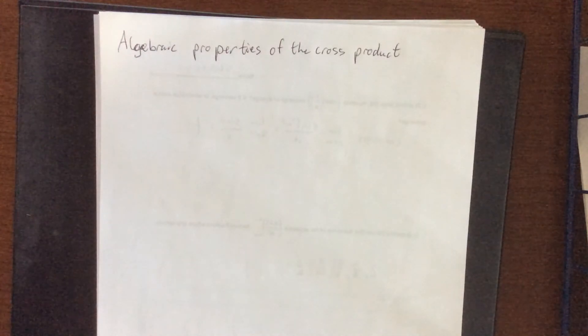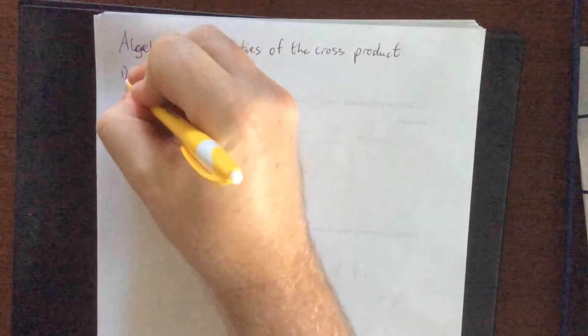Now that we've introduced the geometric properties of the cross product, we're going to introduce the algebraic properties of the cross product. So all six of these are going to be good to know.